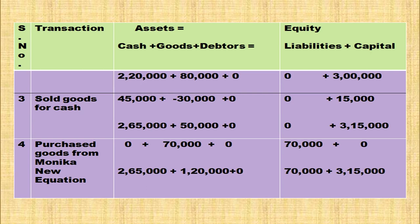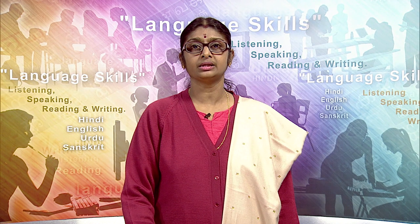Next transaction: purchased goods from Monica rupees 70,000 on credit. Goods coming inside the business — add 70,000 in goods column. Creditors increase, so liability column plus 70,000. New equation: cash 2,65,000 + goods 1,20,000 = liability 70,000 + capital 3,15,000. Both sides total 3,85,000. Accounting equation is satisfied.